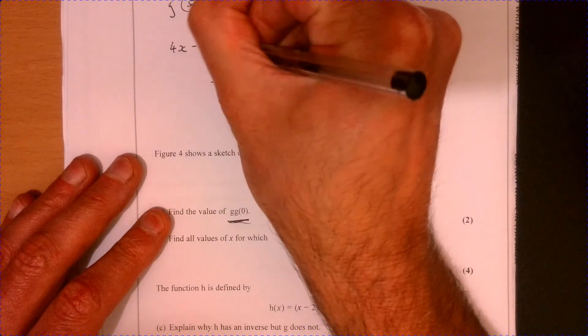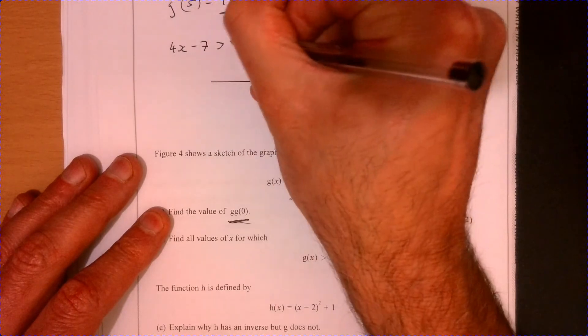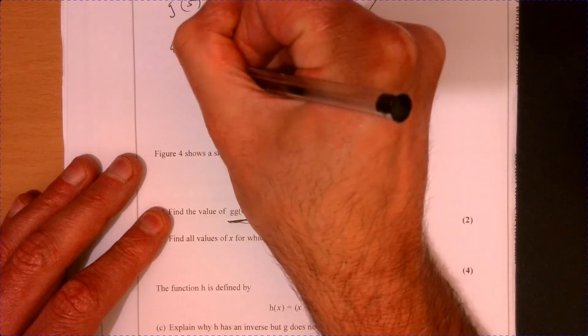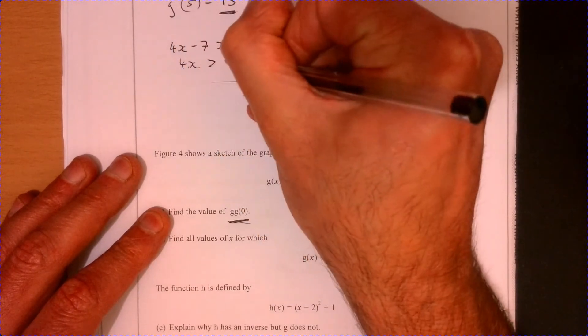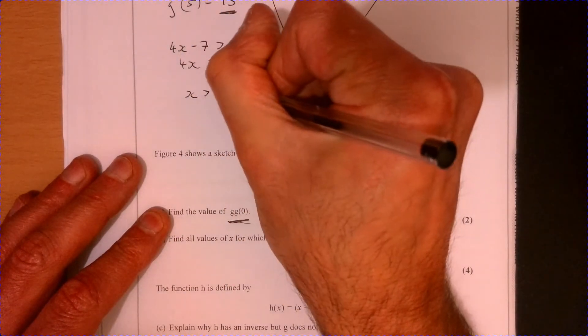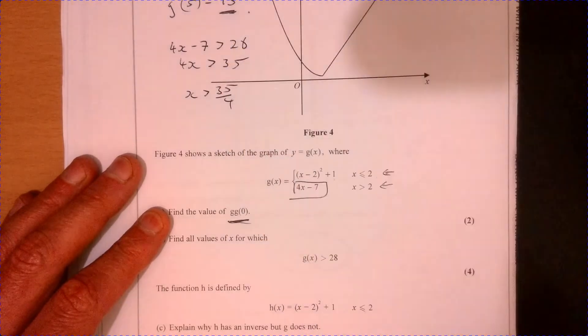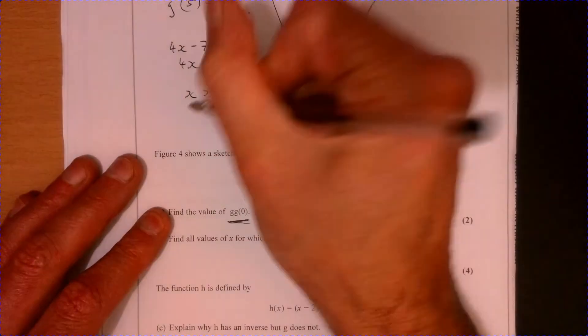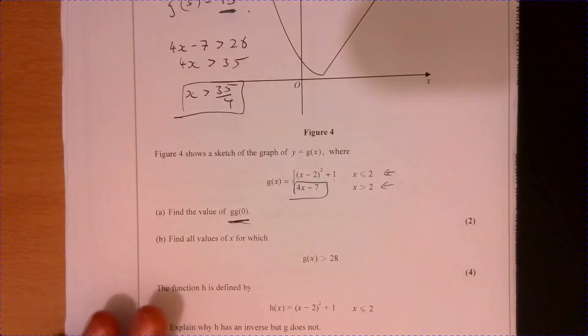So 4x minus seven is more than 28. So 4x has got to be more than 35 divided by four. So x has to be more than 35 over four. Okay, so there's one part of the solution.